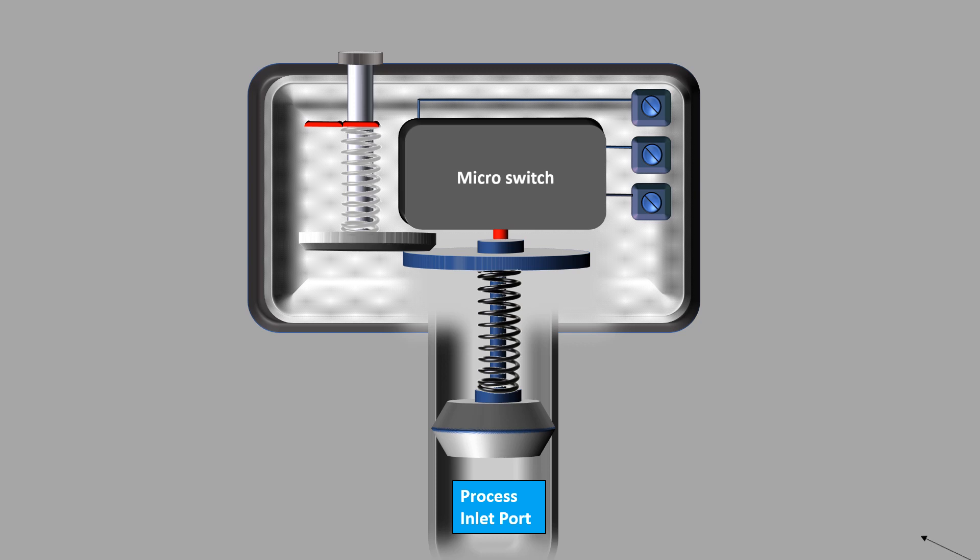Pressure sensing element: This is the main part of the mechanical pressure switch which mechanically deforms according to the fluid pressure and actuates the switch. Diaphragm, piston, or Bourdon tube is usually used as pressure sensing element.